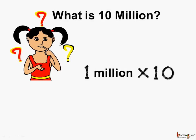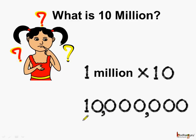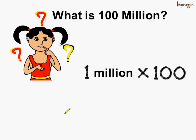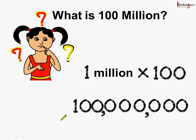Now can you tell what ten million is equal to? It is one million multiplied by ten, which becomes one followed by seven zeros. Next, what is hundred million equal to? It is simply one million multiplied by hundred, so we get a number with eight digits — one followed by eight zeros.